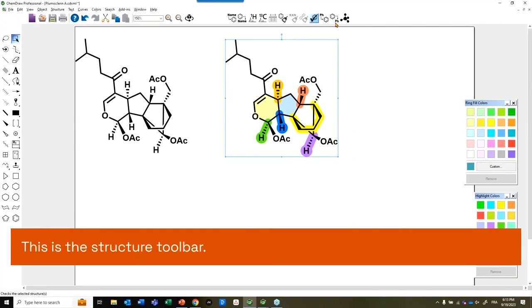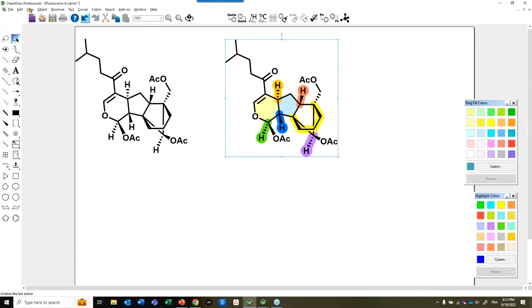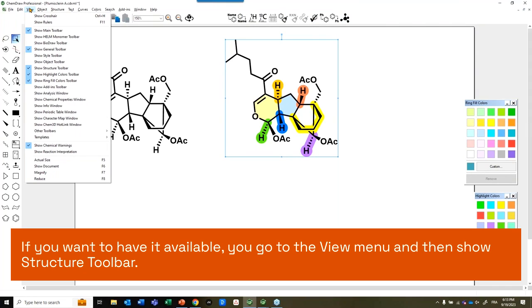So this is the Structure Toolbar. If you want to have it available, you go to the View menu and then Show Structure Toolbar.